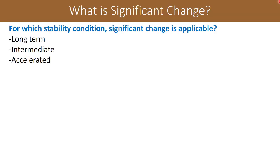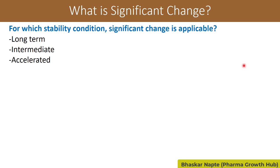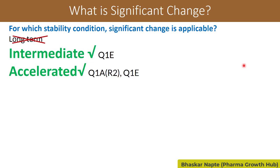Let us begin with the first question: for which stability condition is significant change applicable? As we know, there are three important stability conditions — long term, intermediate, and accelerated. Most of the time people say it is applicable only for the accelerated condition, but based on my own analysis, significant change is not only applicable for accelerated condition but also for the intermediate condition.